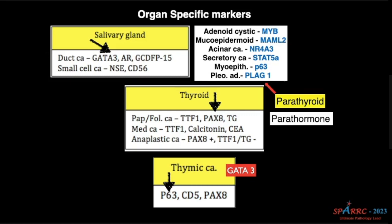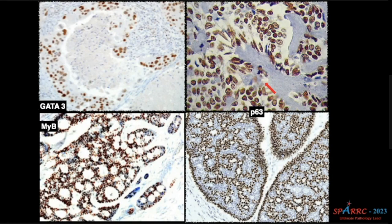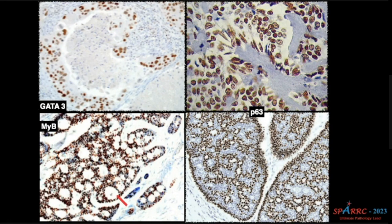Thymic carcinoma can be positive for GATA3. And this is a nice example — salivary duct carcinoma. When you see DCIS in the salivary gland, that is salivary duct carcinoma. It will have a central comedonecrosis followed by high-grade tumor cells, and these high-grade tumor cells will be GATA3 positive. And this is the tumor where there is nicely nuclear positivity for MYB. You can see the spaces — these are all hyaline-like material on H&E. So this is an adenoid cystic carcinoma.